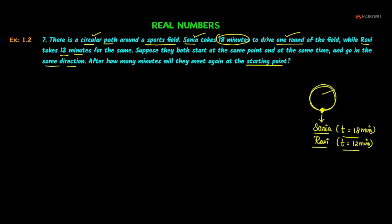After how many minutes will they meet again at the starting point? That is the question. To solve this, we need to find the Least Common Multiple — LCM — of their round times.